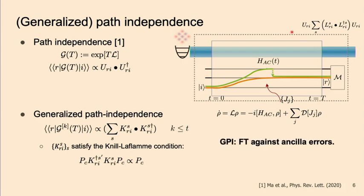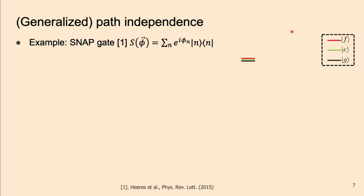The take-home here is that if you can design operations that satisfy the GPI condition, then you are guaranteed to be fault-tolerant against ancilla errors, which are typically messy. As a simple example, we consider the so-called SNAP gate, which applies a number-dependent phase shift on your bosonic mode. We can implement this by introducing a three-level ancilla with G, E, and F states. In the rotating frame, these states are degenerate.